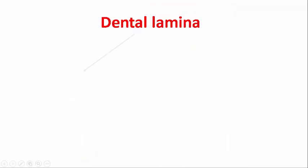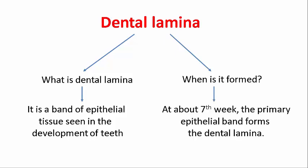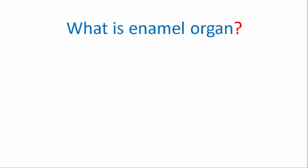Moving on to dental lamina — what is dental lamina? It is a band of epithelial tissue seen in the development of teeth. It is formed at about the 7th week, when the primary epithelial band forms the dental lamina.